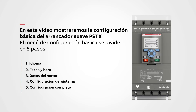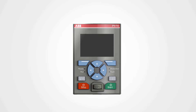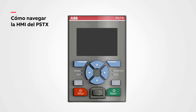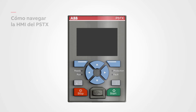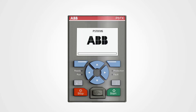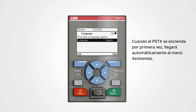How to navigate the PSTX HMI: press the top left button for options, back, and exit. Press the top right button for the menu, select, and save. Use the middle buttons when you need to navigate.